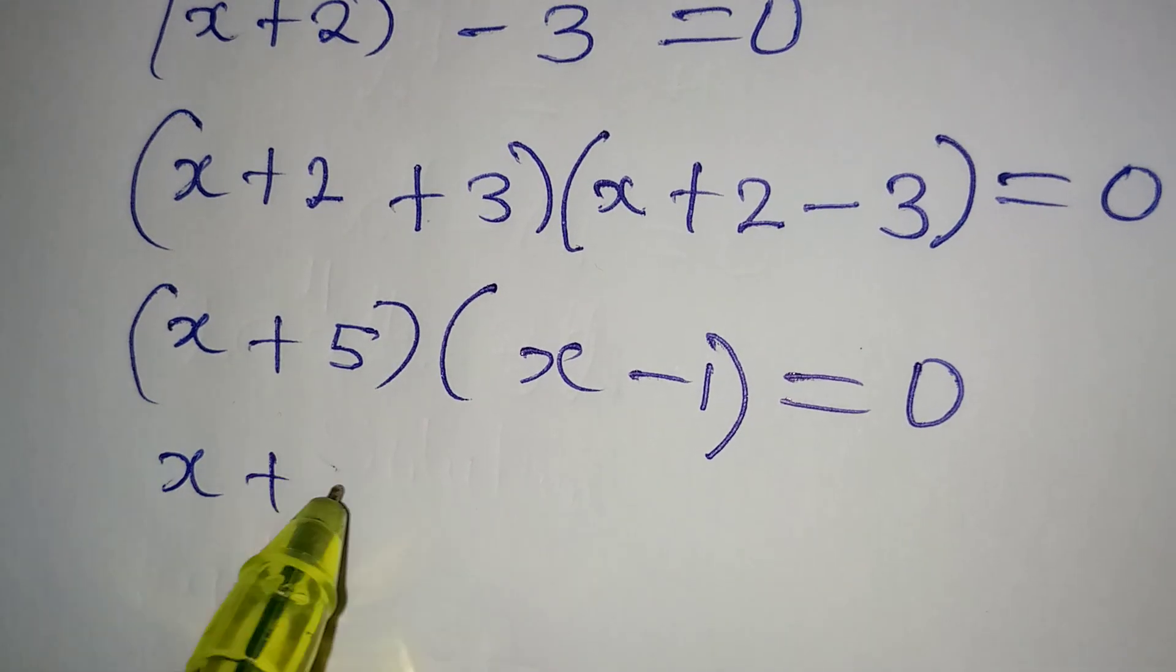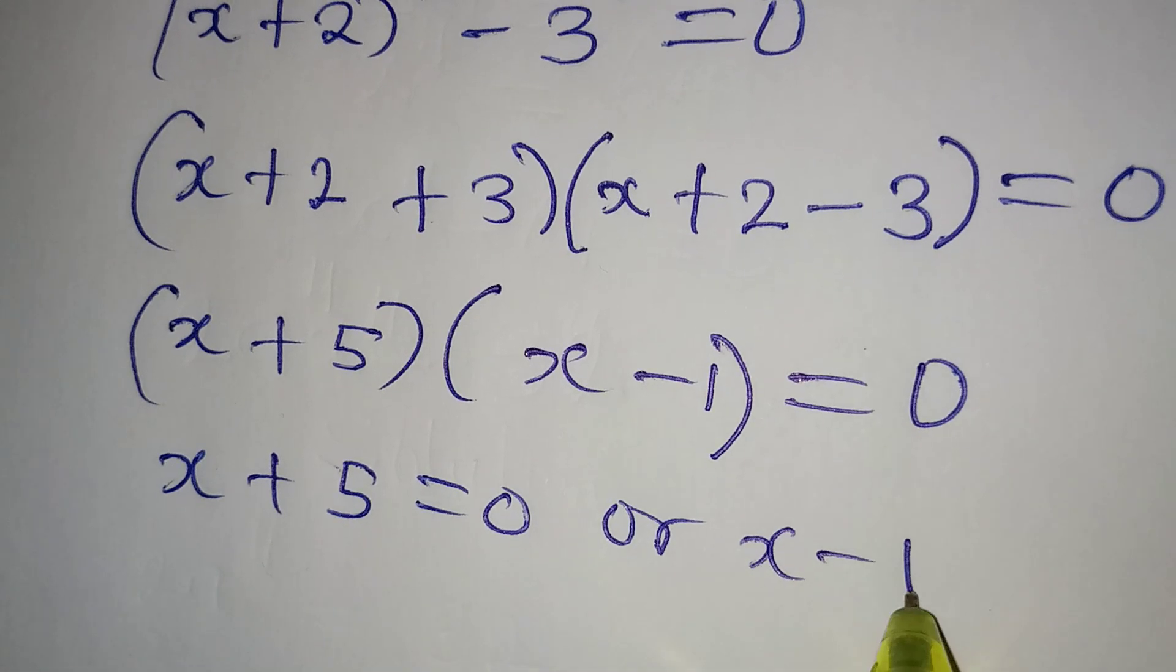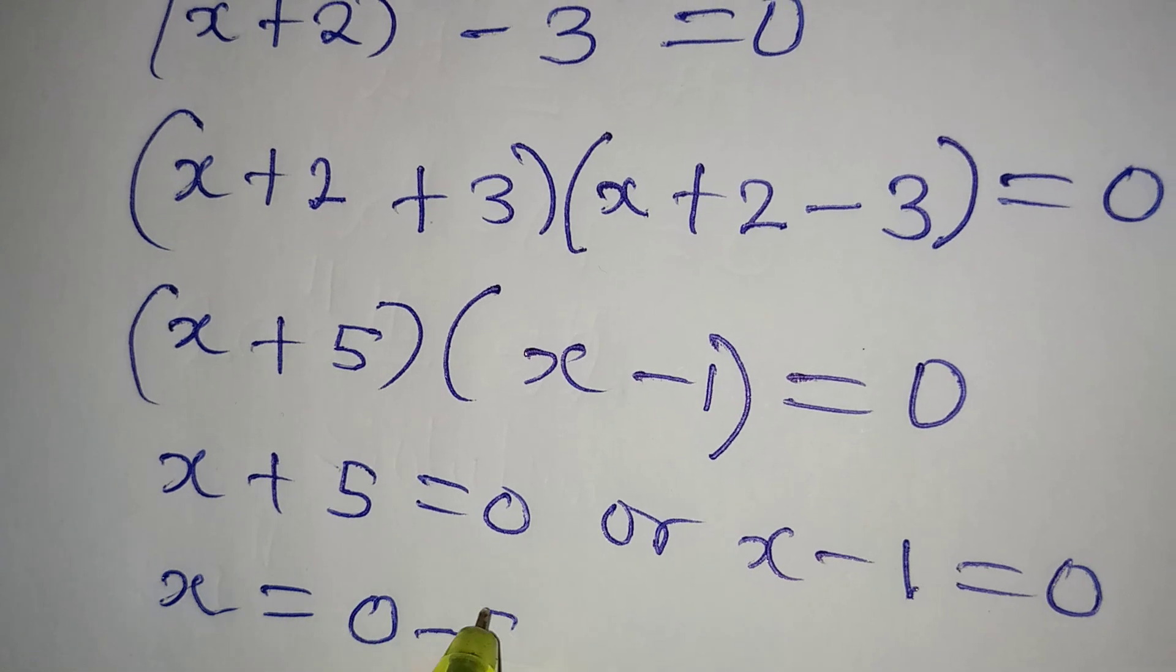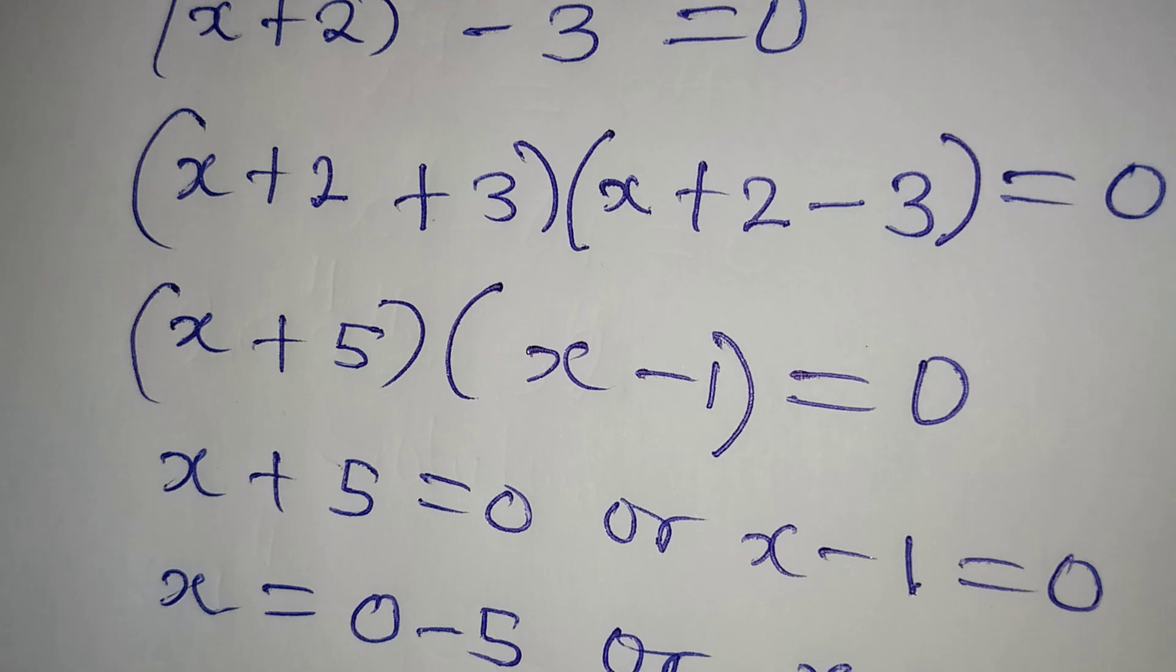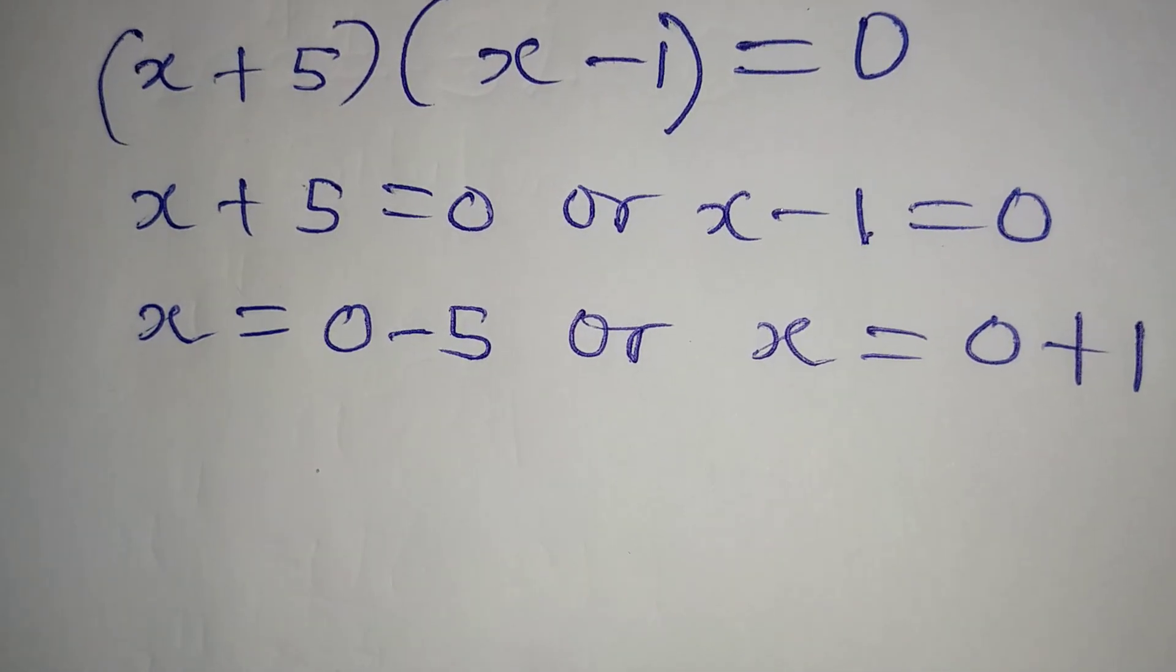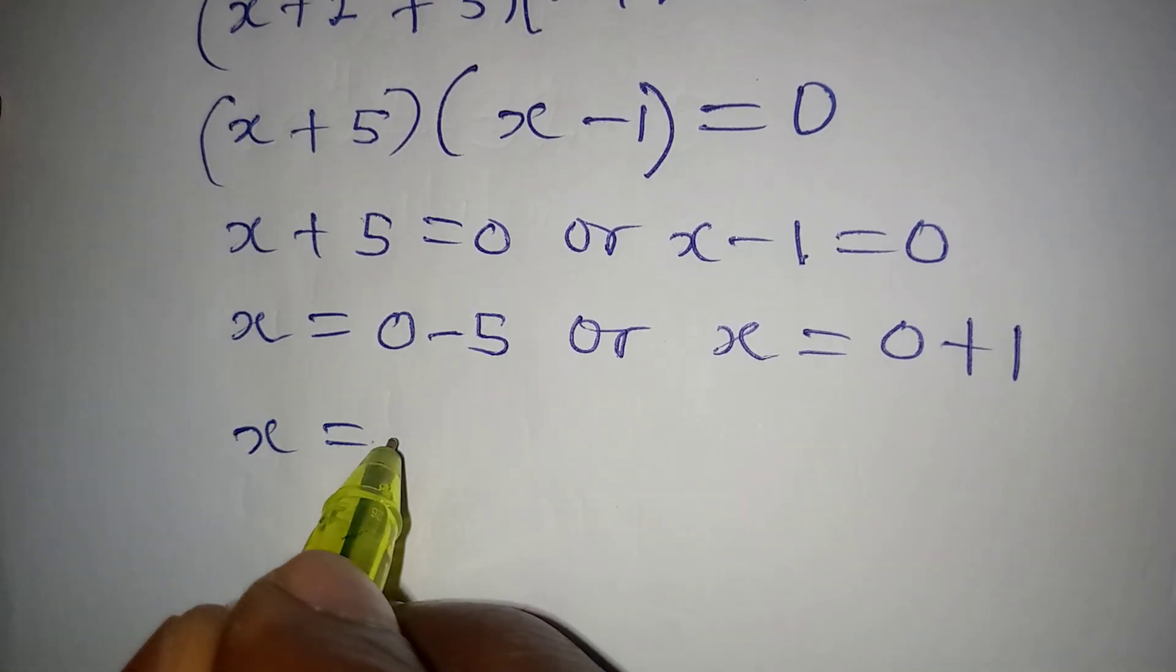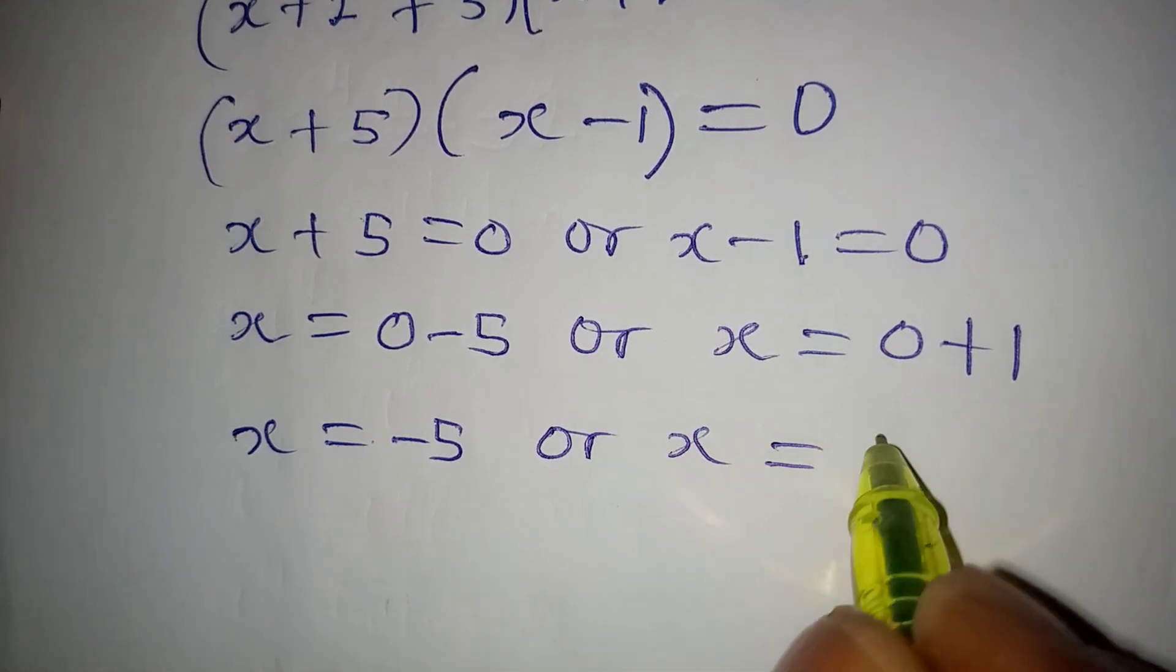So this means that x plus 5 equals 0 or x minus 1 equals 0. x is equal to 0 minus 5 or x is equal to 0 plus 1. So this is what we have. Now to continue with this, we have x to be equal to minus 5 or x here to be equal to 1.